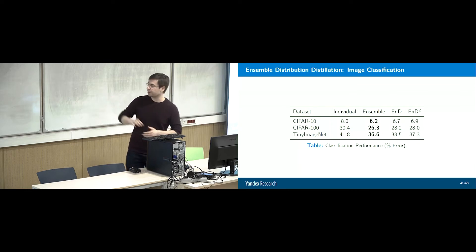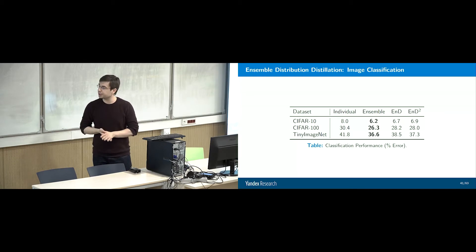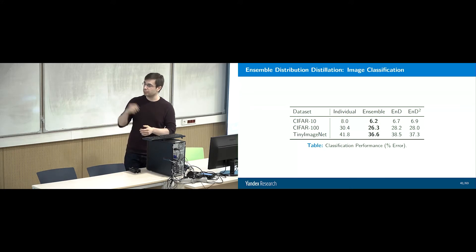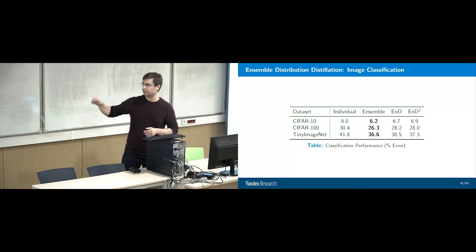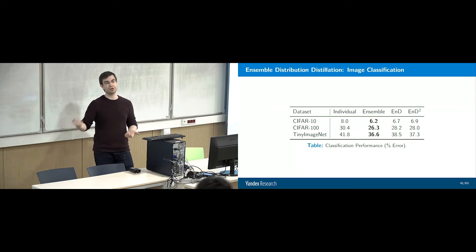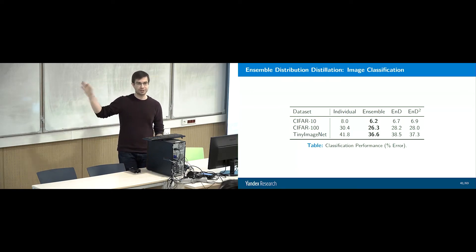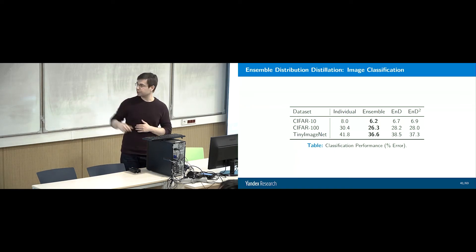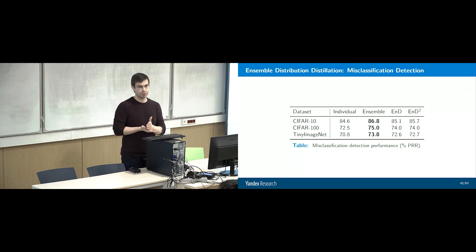The results: individual models get accuracies far lower than the ensemble. The ensemble achieves the best performance as expected. Ensemble distillation gets most of those gains. Ensemble distribution distillation typically does about the same or a little better than ensemble distillation. So we have retained most of the accuracy advantage of the ensemble. This is a baseline sanity check that we're not doing anything worse than ensemble distillation — and it works for CIFAR-10, CIFAR-100, and Tiny ImageNet.